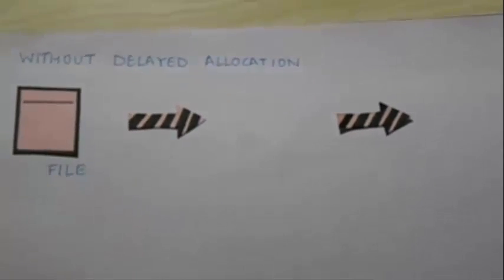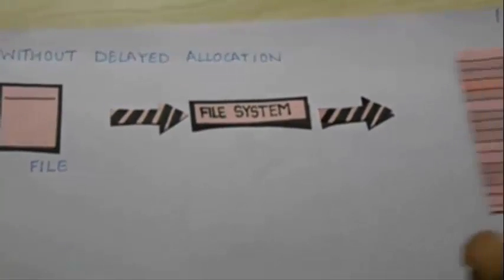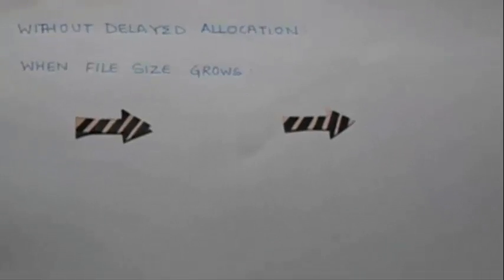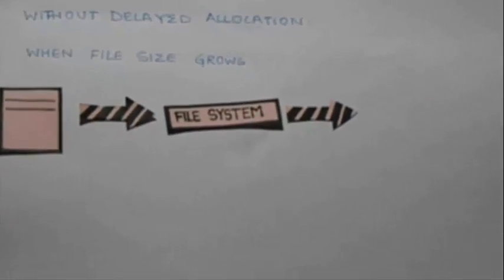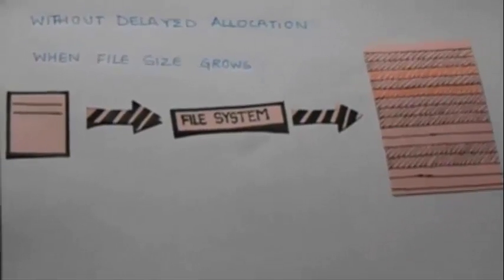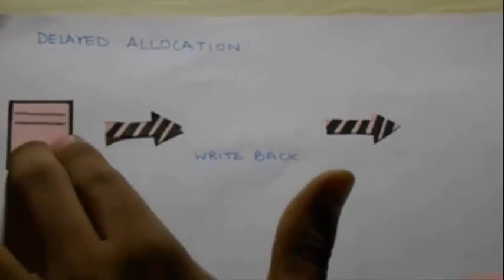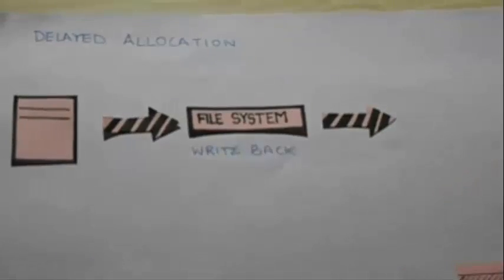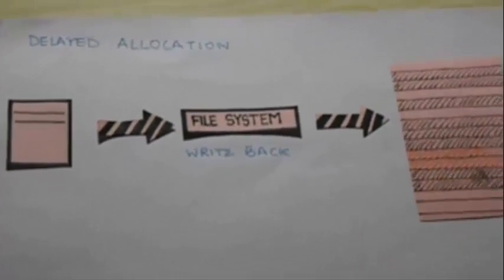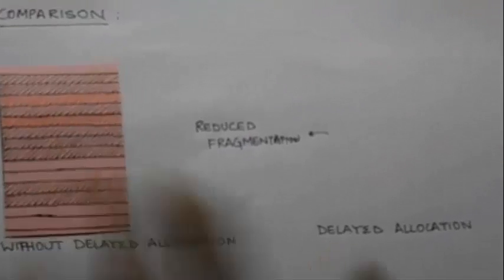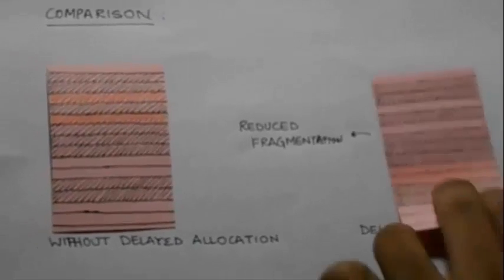In a file system without delayed allocation, when a file is created, the file system immediately allocates memory blocks to the file. As the file size grows, the file system allocates new blocks to the file. But in a file system with delayed allocation, the file system waits until the file is ready to be written back into the hard drive. As we can see, this performance feature leads to reduced fragmentation.